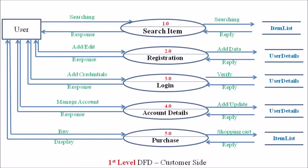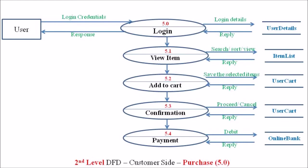In the Level 2 DFD of the purchase on the customer side, a user can purchase or order a particular commodity by logging into the system. The first process associated with the purchase process is login, represented in an ellipse with process number 5.0. A customer can log in by providing the customer name, login ID or username, and password. These login credentials are verified by the login process with the help of the user detail database.